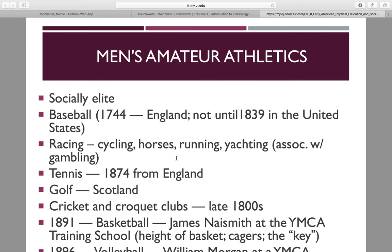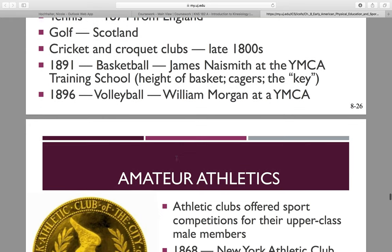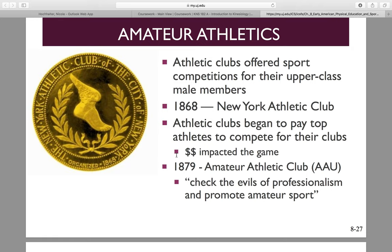Men's amateur athletics were played by the socially elite. If you were part of the socially elite class, you would participate in baseball, racing, tennis, golf, cricket, or basketball. Men's amateur athletics existed before anything else — we don't have college athletics at this time; men's amateur athletics came first. Athletic clubs began to pay top athletes to compete, and money definitely impacted the game. In 1879, the AAU — Amateur Athletic Union — was developed to check the evils of professionalism and promote amateur sports, wanting to bring it back to playing sports simply for fun.